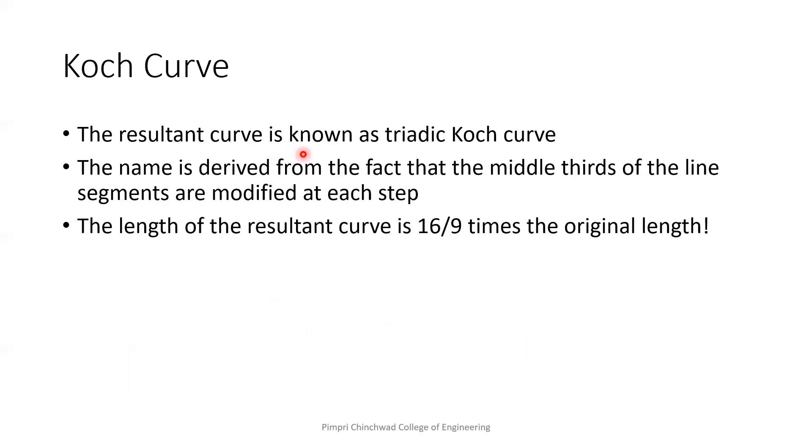So like that, these will continue in finite times or as long as you want. So the resultant curve is known as triadic Koch curve as well. Why? Because the name is derived from the fact that the middle third of the line segments are modified at each step. If I divide the segment into the straight line into three segments, the mid part is taken and that is replaced by the equilateral triangle. So this curve is known as the triadic Koch curve as well.